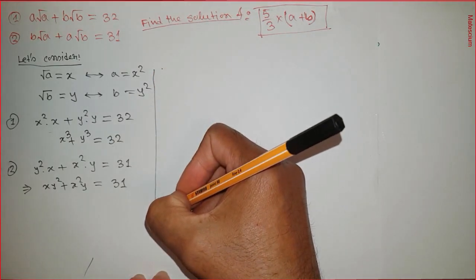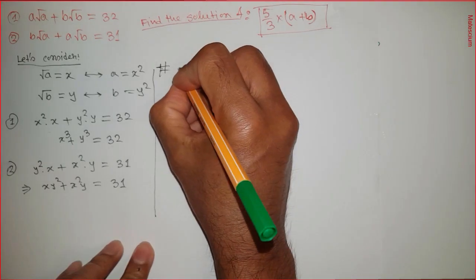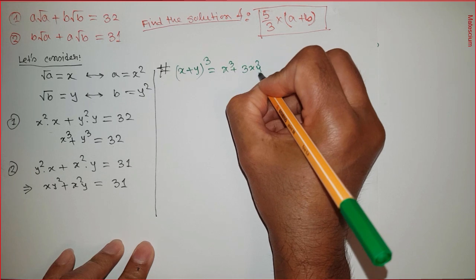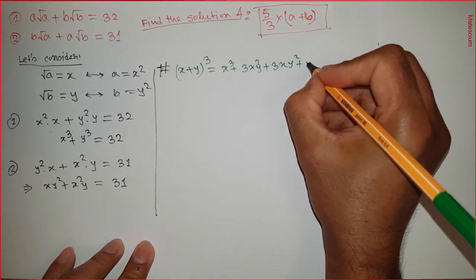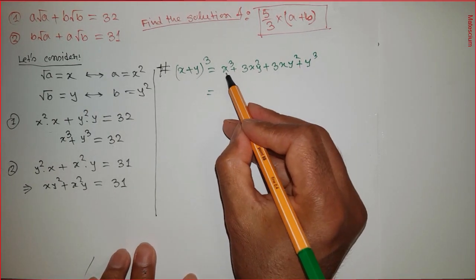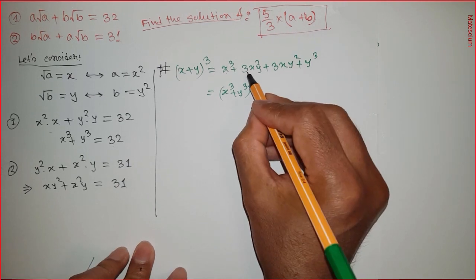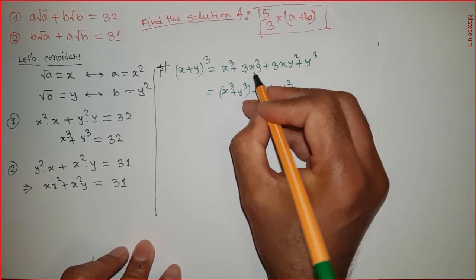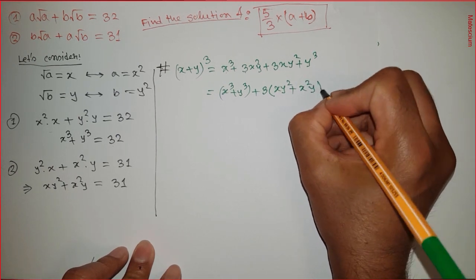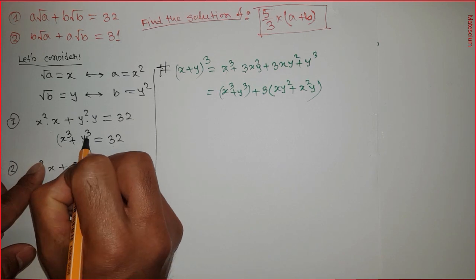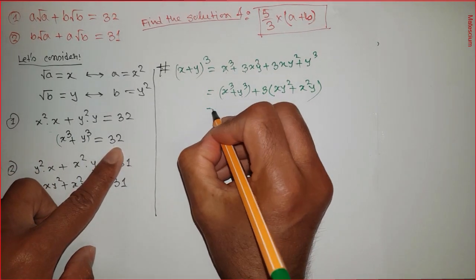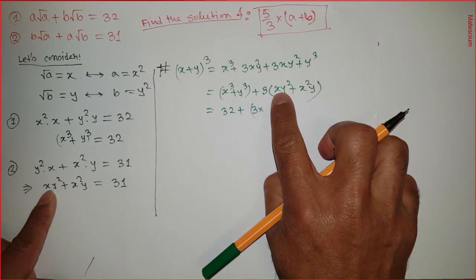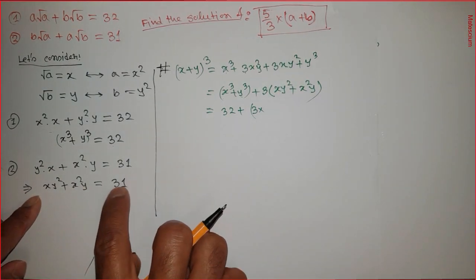Now I'll introduce a high school formula: (x + y)³ = x³ + 3x²y + 3xy² + y³. Taking x³ and y³ together, and factoring 3 from the remaining terms, we get (x + y)³ = (x³ + y³) + 3(xy² + x²y). The term x³ + y³ equals 32, so we substitute: 32 + 3 times (xy² + x²y), and xy² + x²y equals 31.